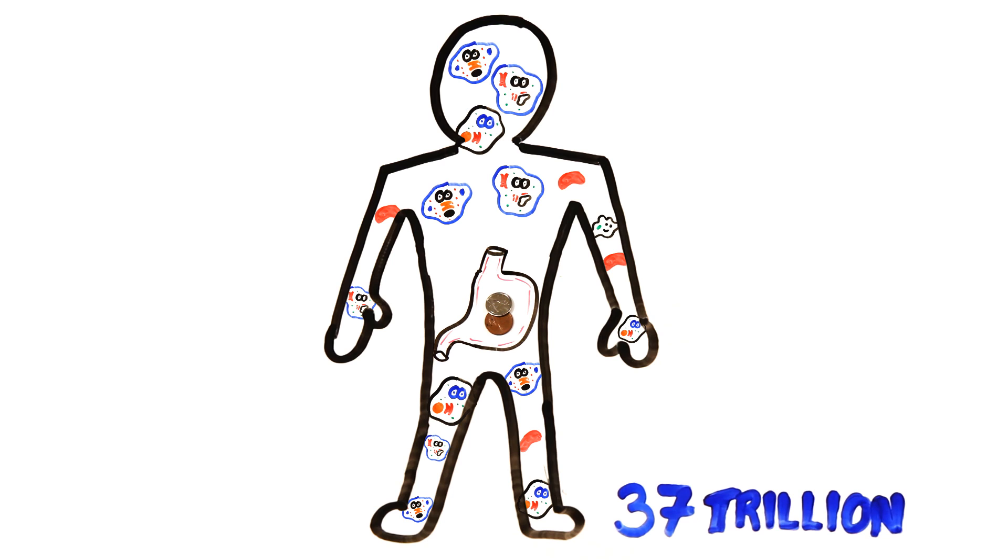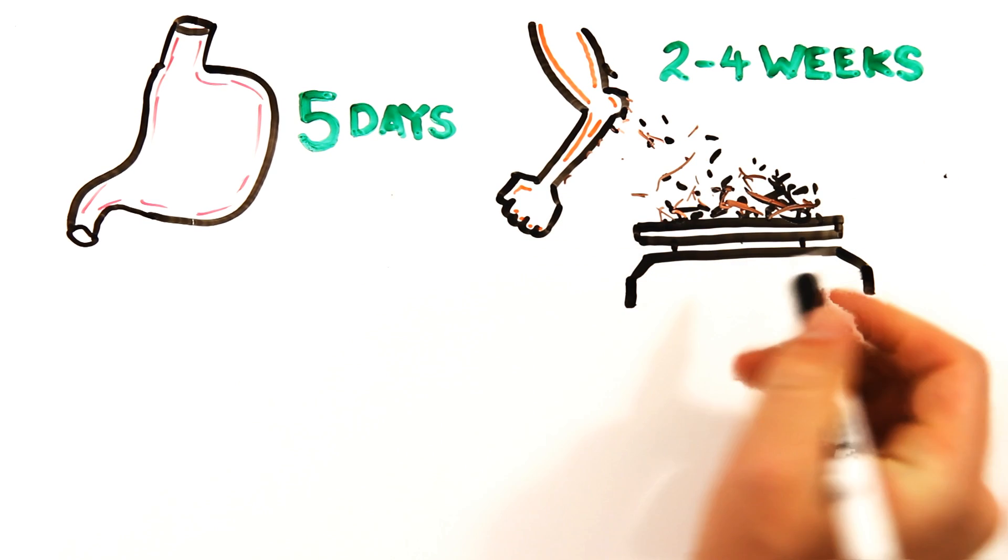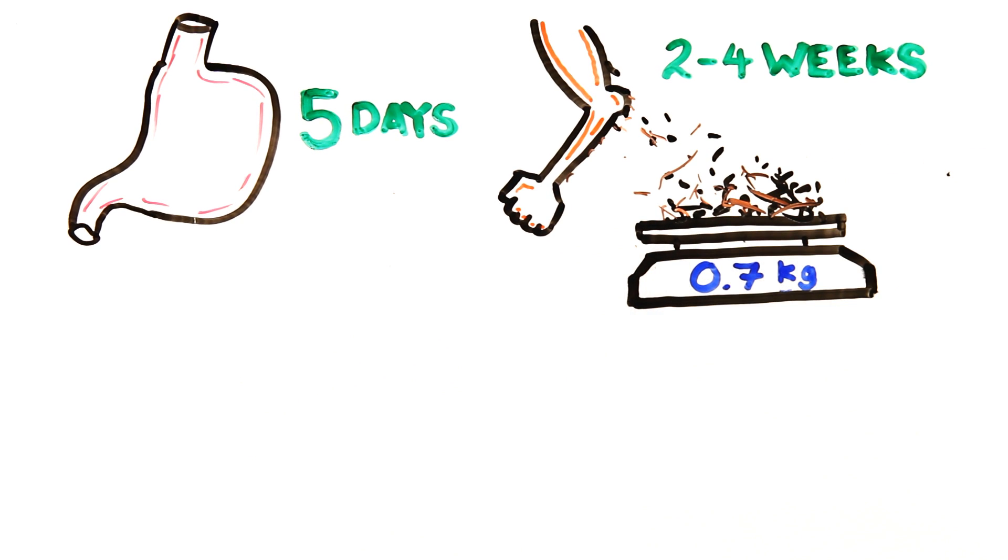The cells that line your stomach regenerate every 5 days, which makes sense as stomach acid can dissolve metal. Your skin's outer layer, known as the epidermis, is shed every 2 to 4 weeks, meaning after one year you'll shed roughly 0.7 kilograms of dead skin.